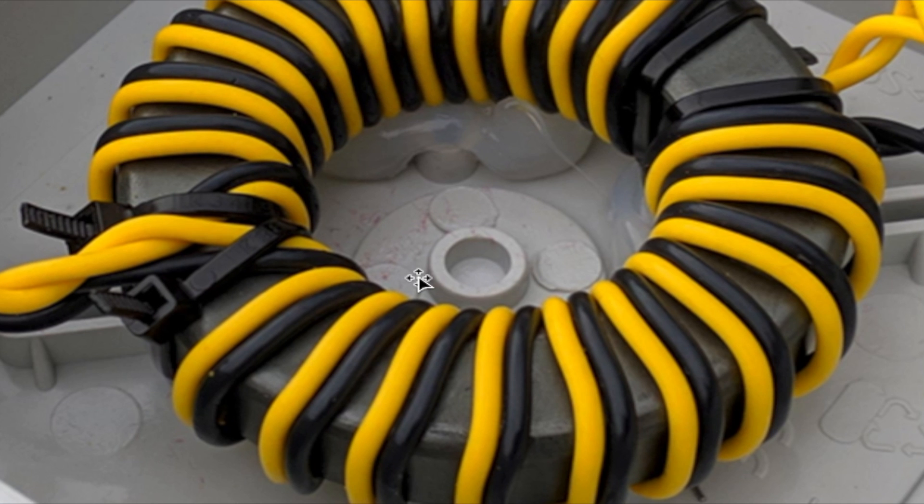The first thing you want to do is cut two pieces of 18 gauge wire, whatever colors you may choose. You're going to twist those two pieces of wire together and then wrap them around the toroid.